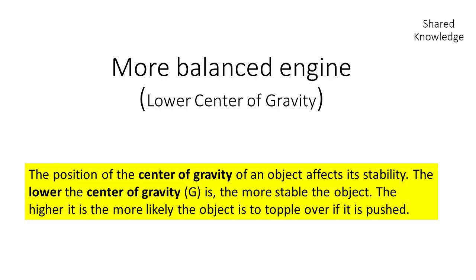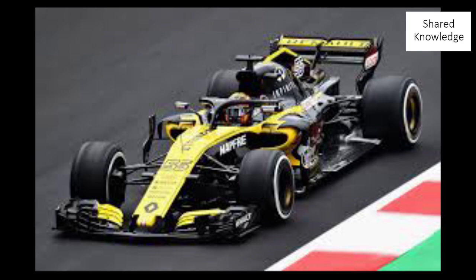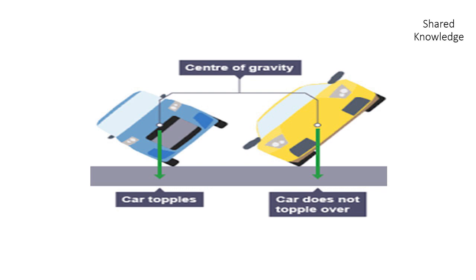The position of the center of gravity affects stability — the lower it is, the more stable the object. The higher it is, the more likely the object is to topple over. Most racing cars are built very low to the ground to lower the center of gravity. You can see how the yellow car, being smaller and lower, doesn't topple even going through a sharp corner, whereas a car with a higher center of gravity is much easier to topple.